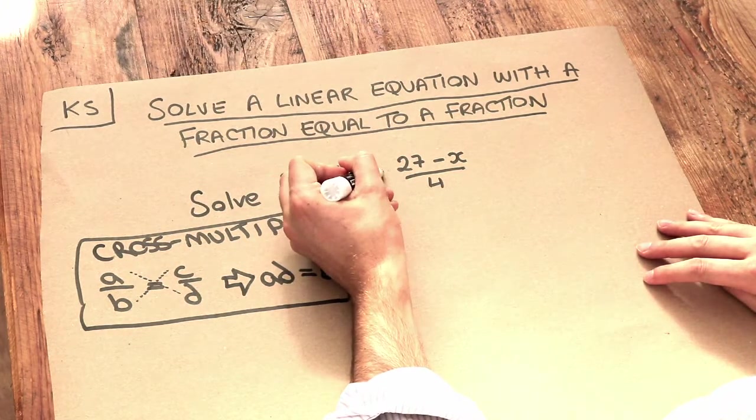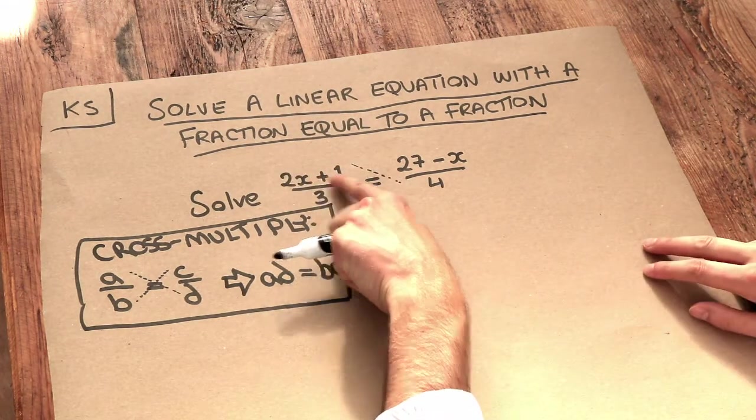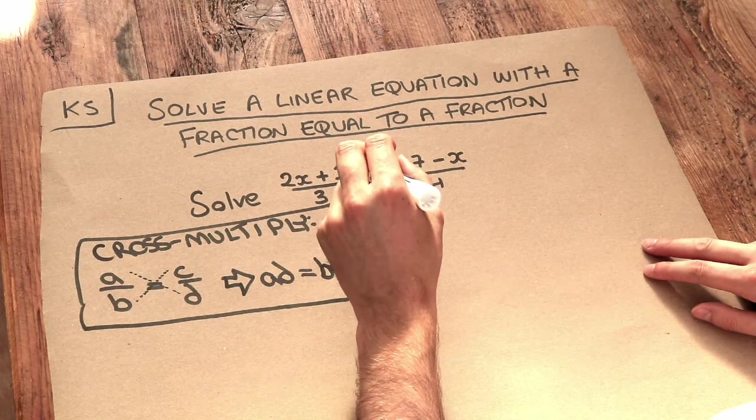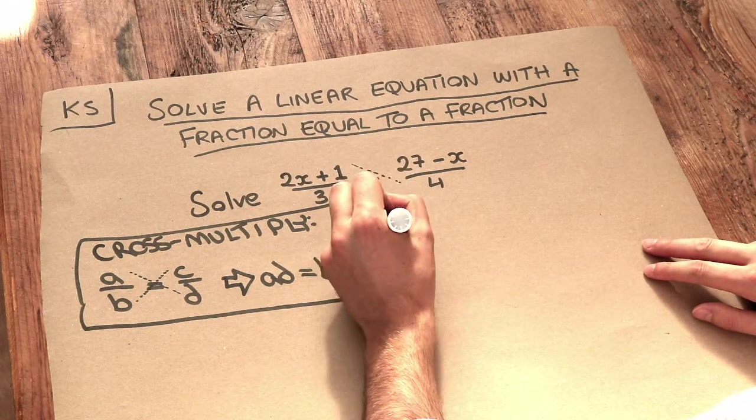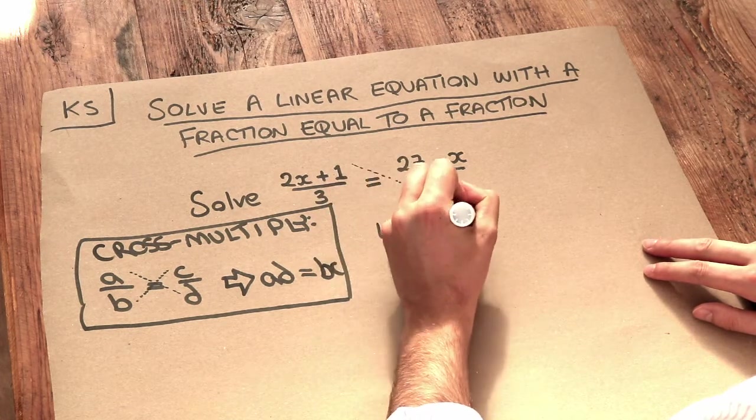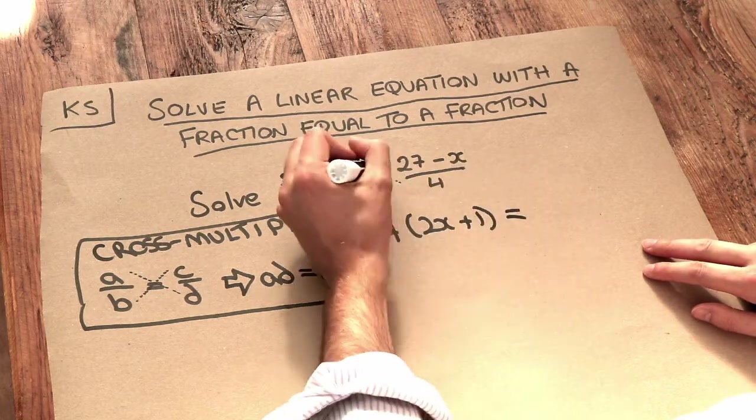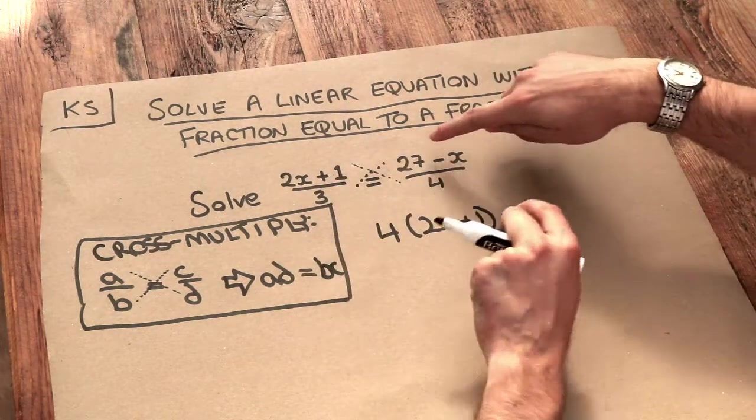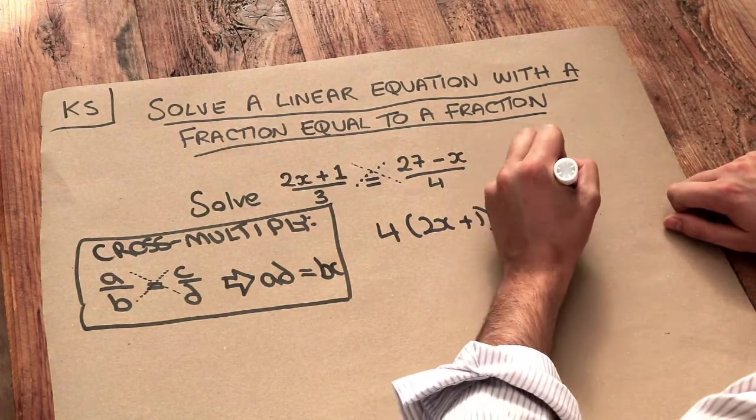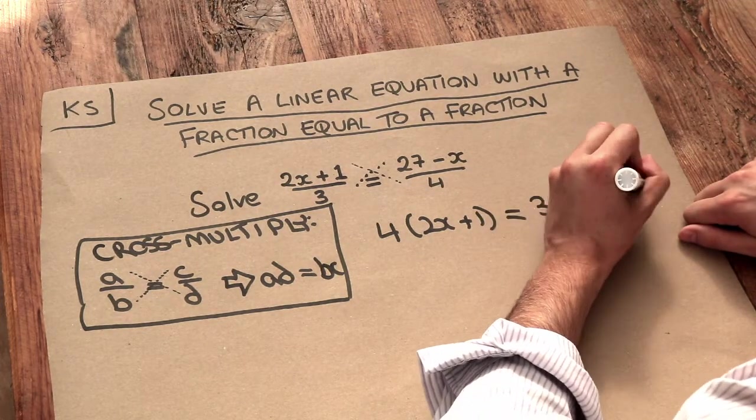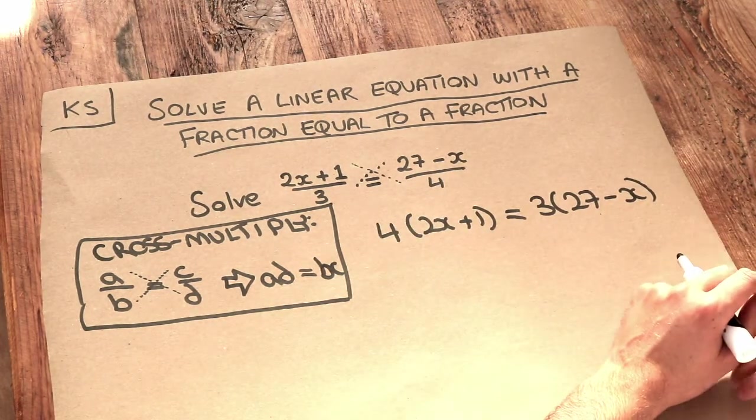We're going to multiply diagonally, so we do 2x plus 1 multiplied by 4. I'll write that with brackets: 4 times (2x plus 1). Then we multiply diagonally this way, so 3 gets multiplied by (27 minus x). Let's do that, and lo and behold, there are no fractions left.